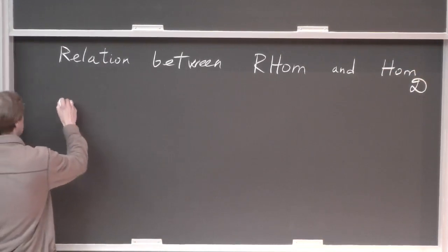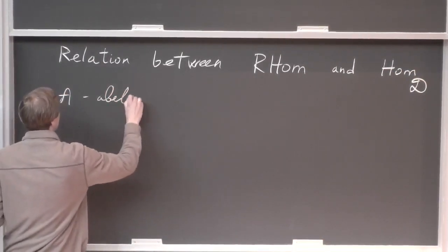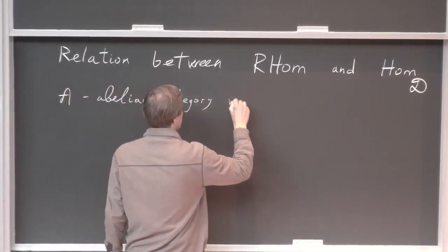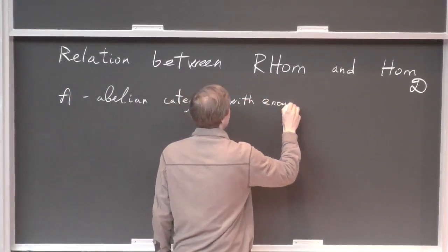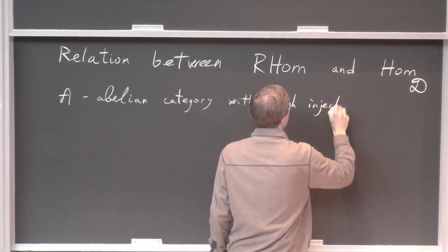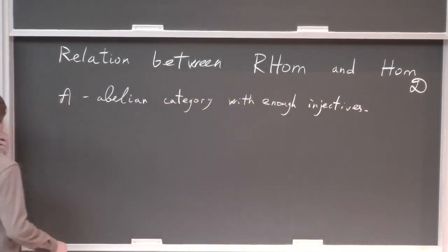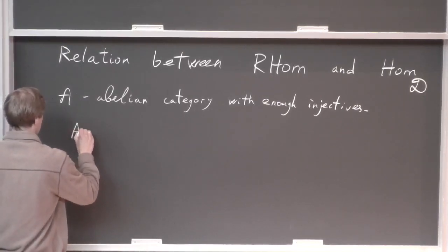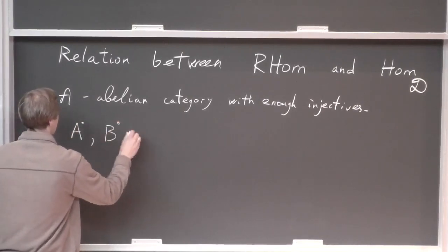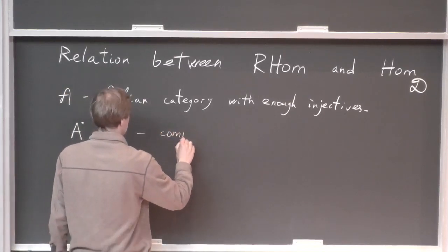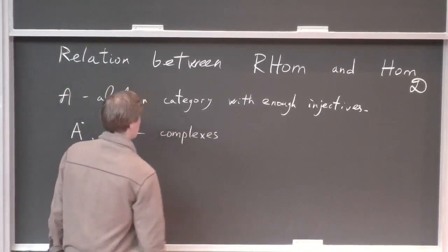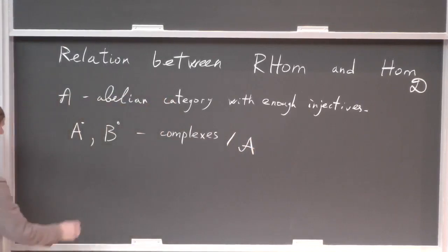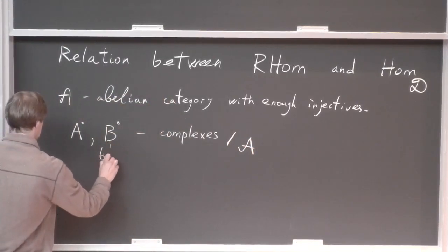Suppose you have an abelian category and let's say it has enough injectives. So then when we have two complexes over A, and assume that the second one is bounded below.